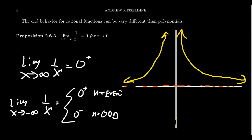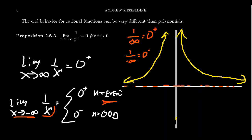We can make a general statement: plugging in infinity gives 1 over infinity, which equals zero. Dividing by infinity gives zero. More precisely, 1 over positive infinity approaches zero from above (zero plus), and 1 over negative infinity approaches zero from below (zero minus). In the even case, as X approaches negative infinity, you're taking an even power of a negative number, which is positive, so the denominator is still a large positive number — meaning the fraction approaches zero from above in that case as well.